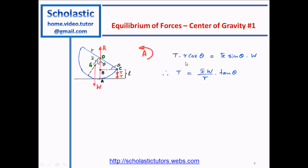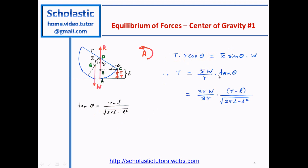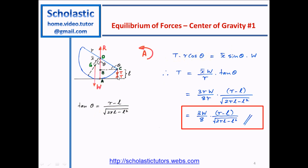Taking T to one side, since T is what we want to find: T equals X-bar times W divided by R, and sin θ divided by cos θ becomes tan θ. We know tan θ equals (R minus L) divided by the square root of 2RL minus L squared. Substituting X-bar equal to 3R/8 and tan θ, we get the final answer for the tension of the string pulling the hemisphere to an angle.